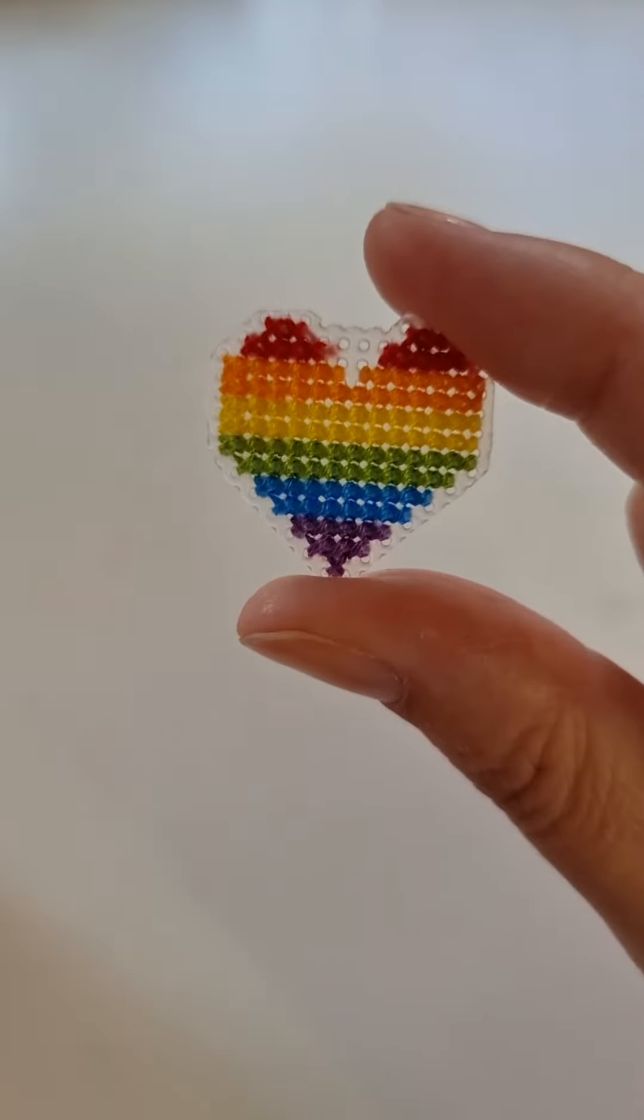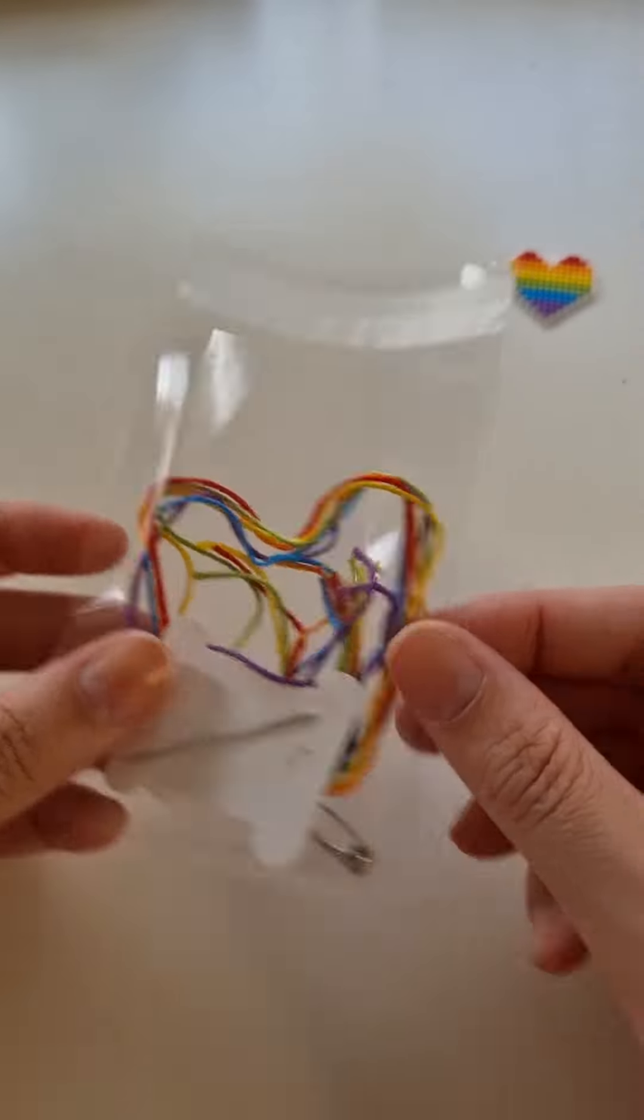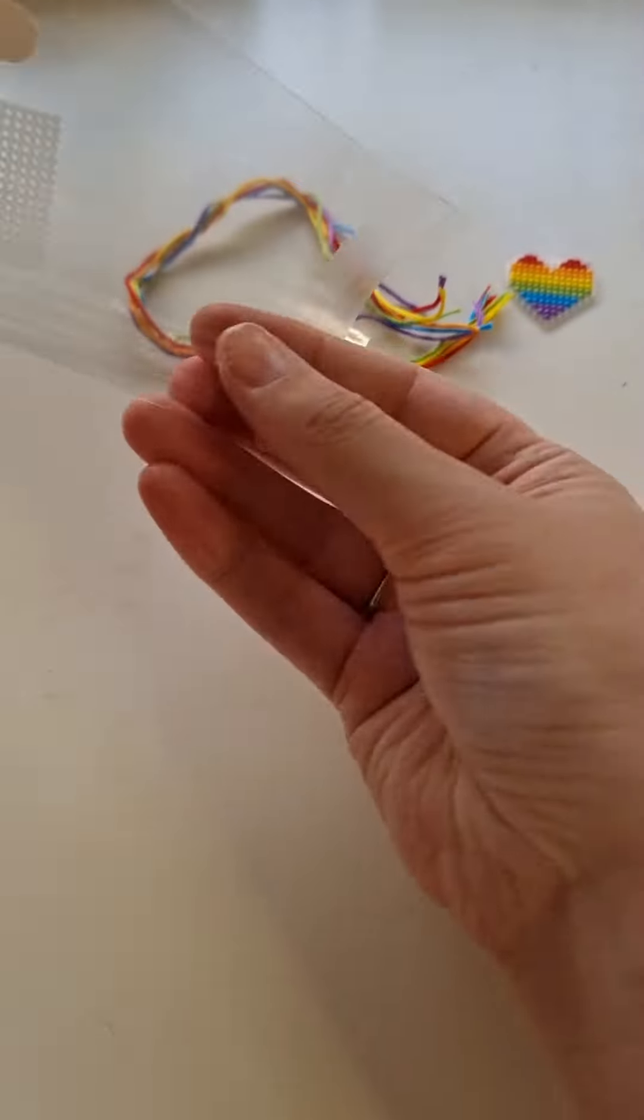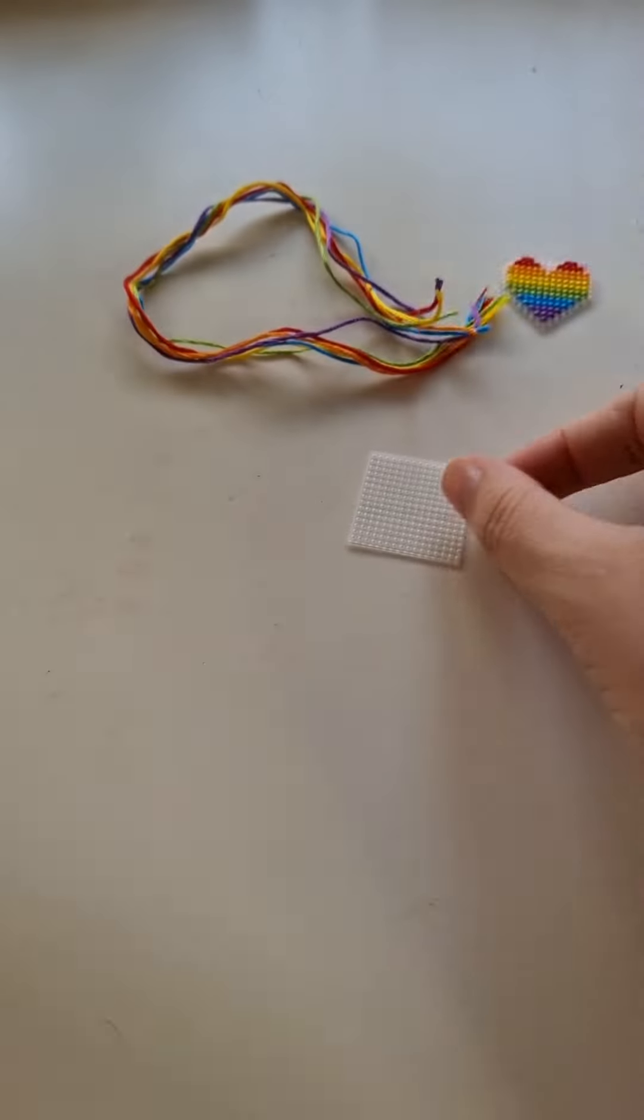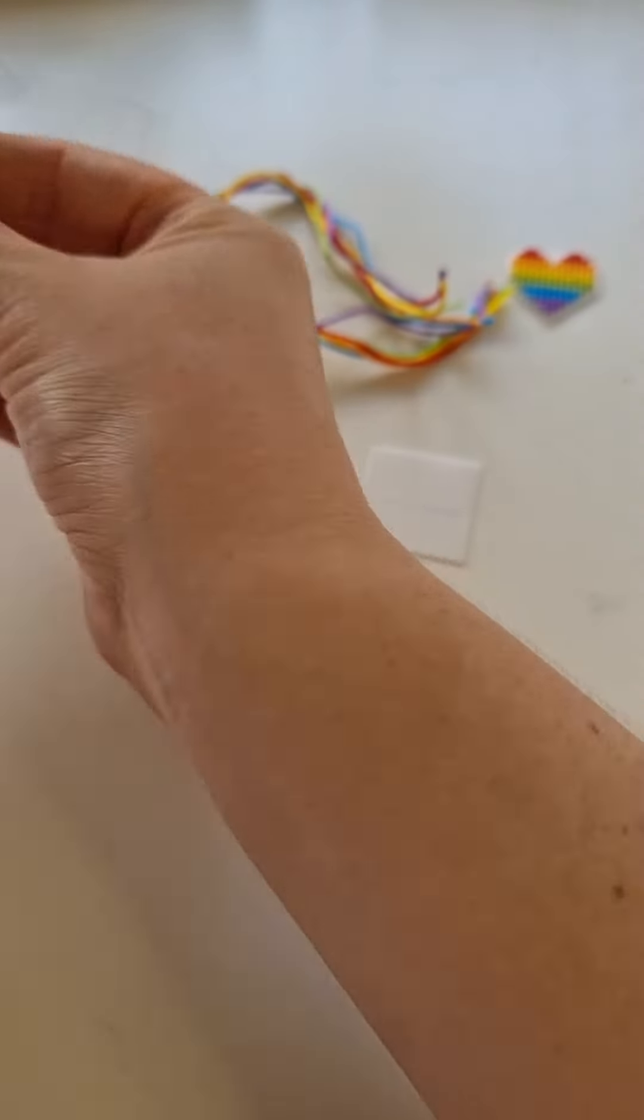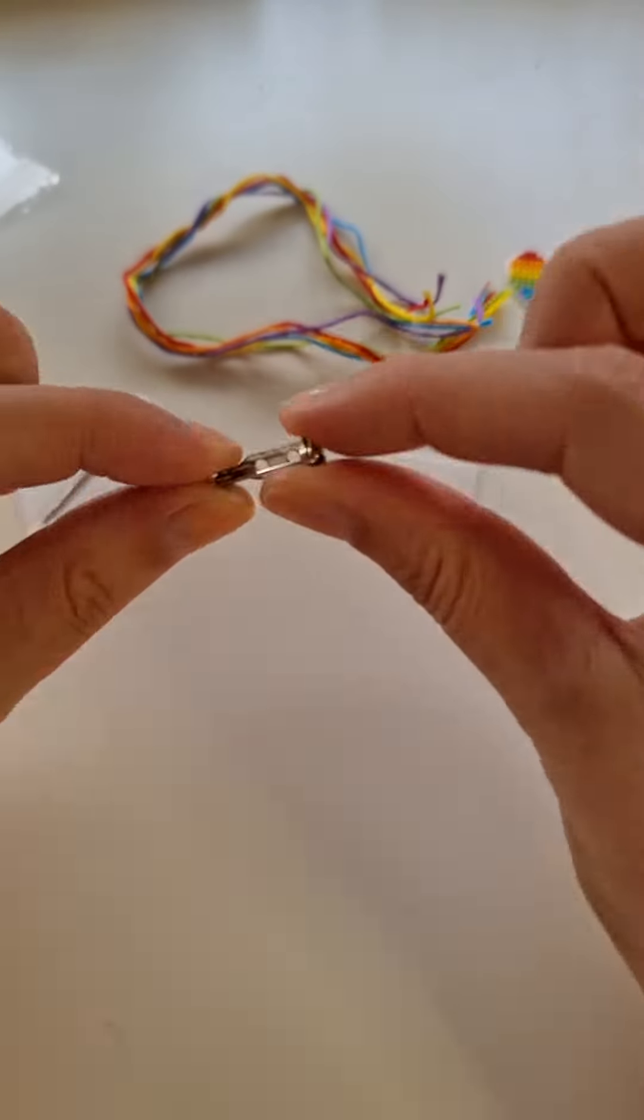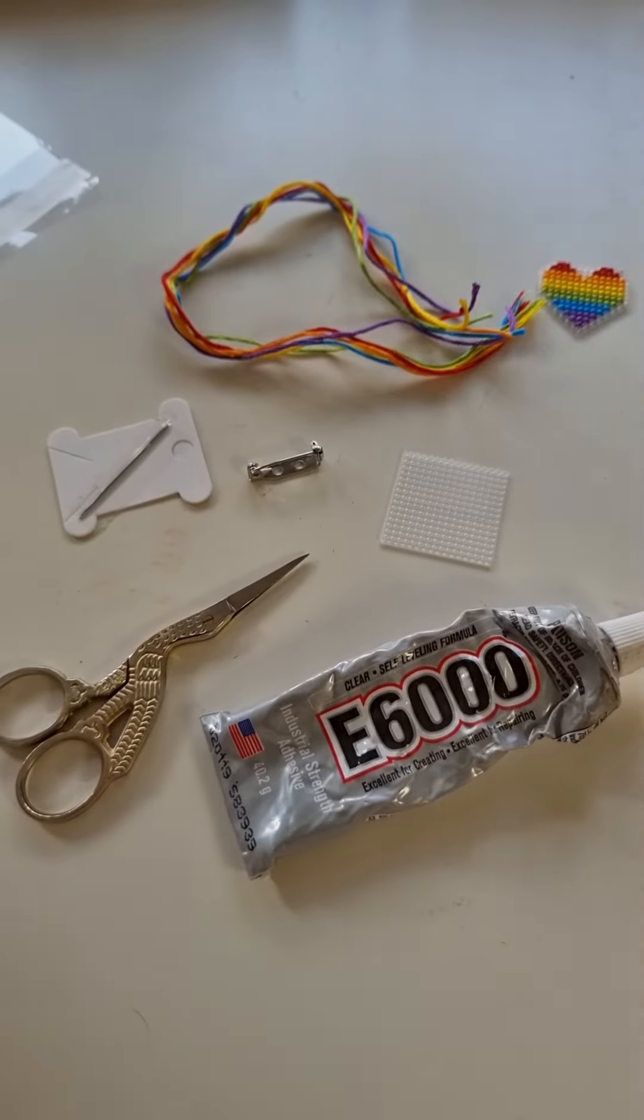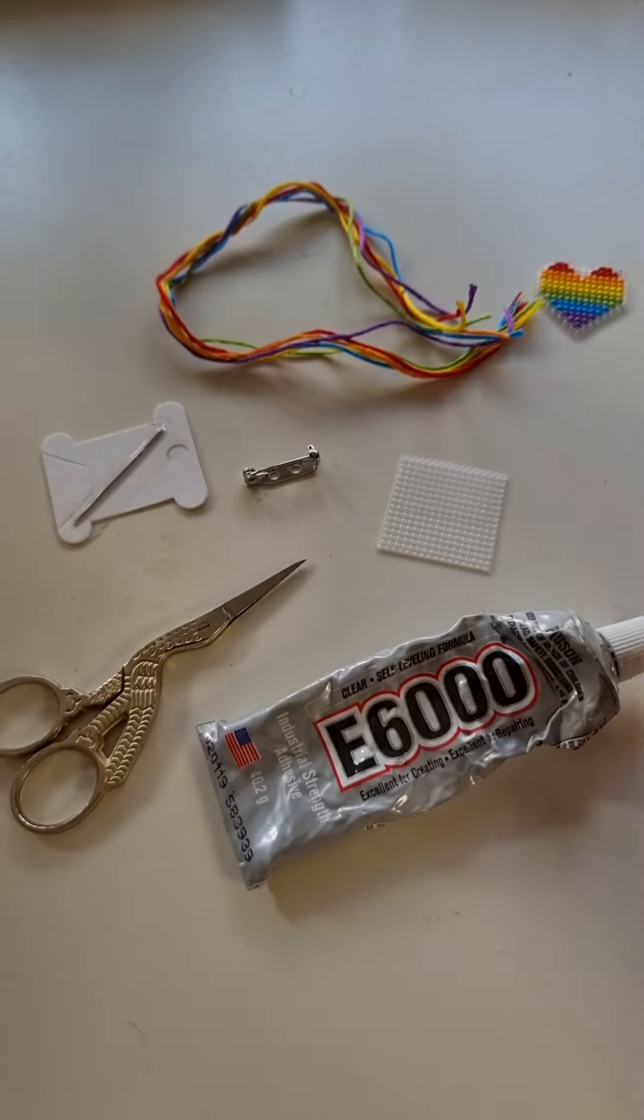Let's make a cross stitch rainbow heart badge. To make this project you'll need some colored threads, plastic canvas, a needle and a badge backing. You'll also need some sharp scissors and some strong glue. I'm using E6000 glue.